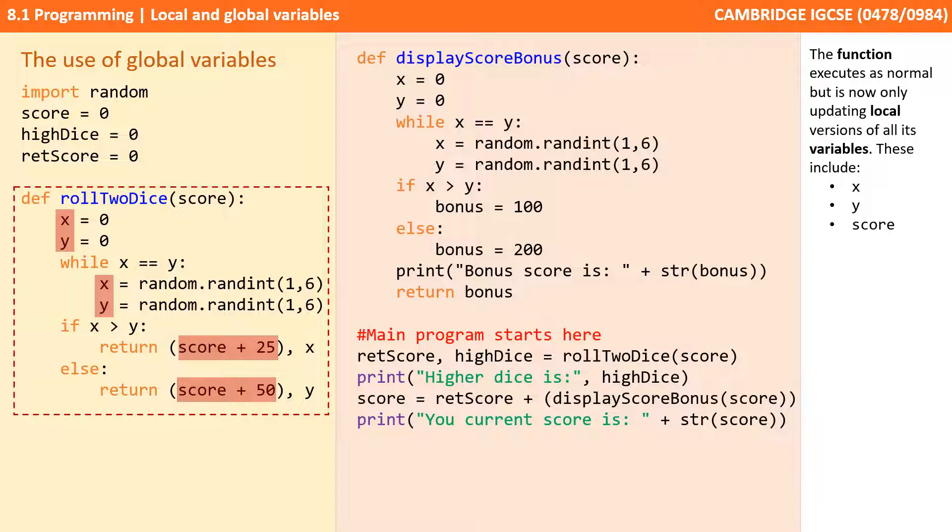The function executes as normal, but it is now only updating local versions of all its variables, and these include x, y, and score.